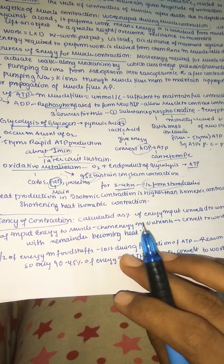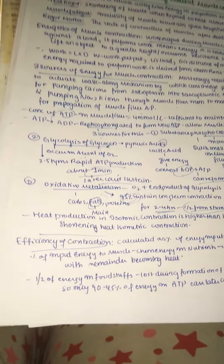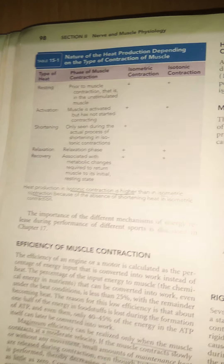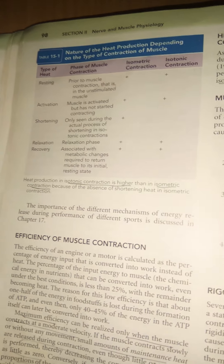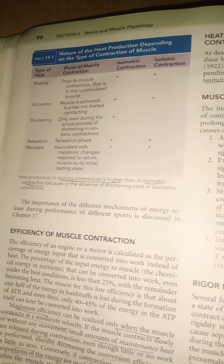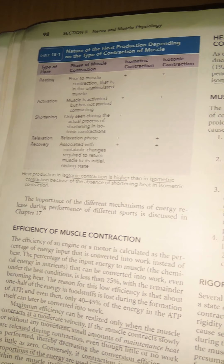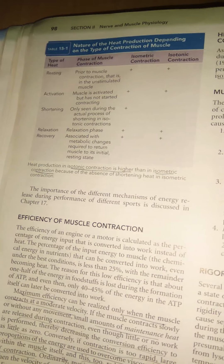Heat produced in isotonic contraction is higher than in isometric contraction, mainly because of the absence of shortening heat in isometric contraction. Looking at the diagram showing heat production depending on type of contraction, in the resting phase, activation phase, and relaxation phase, both isometric and isotonic are positive. In the shortening phase, only isotonic contraction shows shortening heat — isometric shows none.